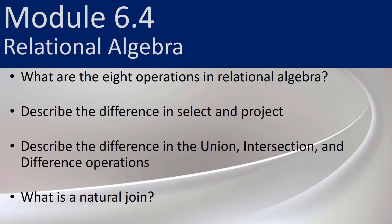In module 6.4, we are going to be introducing the concept of relational algebra and discussing the eight operations in relational algebra. There are two unary operators and six binary operators. We'll describe the difference between the two unary operators of select and project, talk about the three set theory operators — union, intersection, and difference — and also the natural join. We'll also be introduced to some basic SQL code. So let's get started.